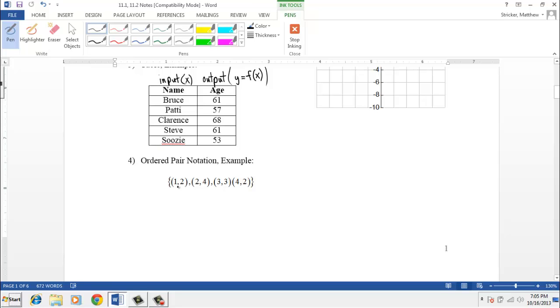Same thing here, we have an input of one going to two, we have two going to four, we have three going to three, we have four going to two.